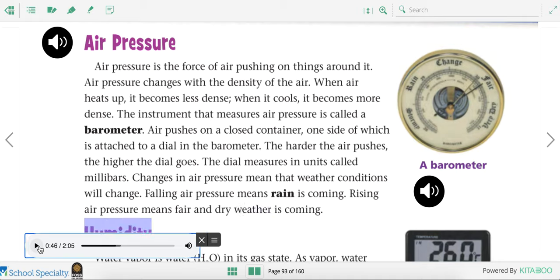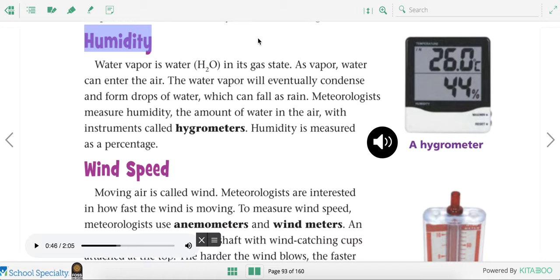So meteorologists also measure air pressure. If the air pressure goes down or falls, that means rain is coming. If the air pressure rises or goes up, that means dry weather is coming. They also measure humidity.